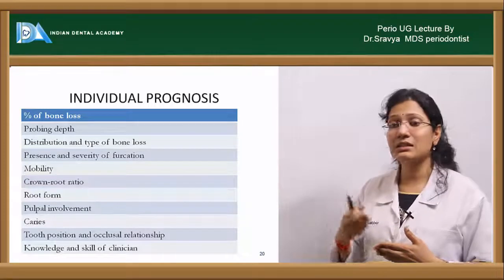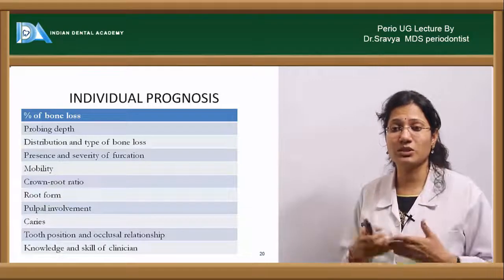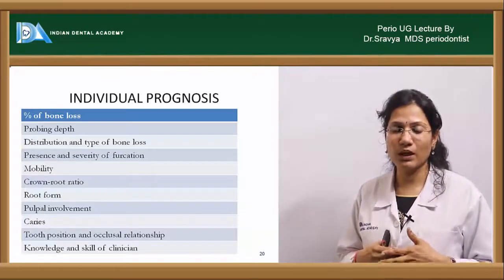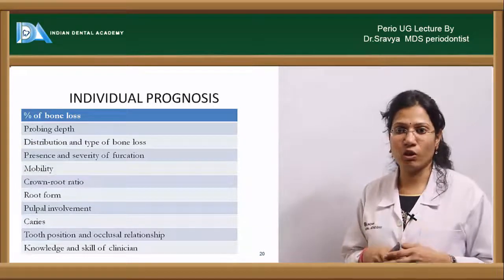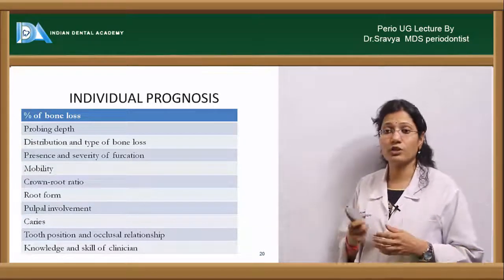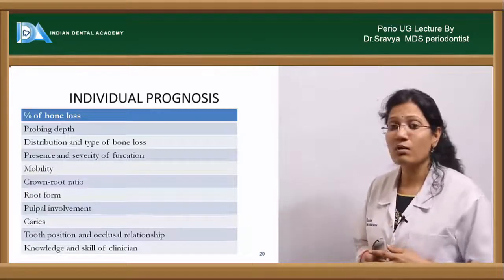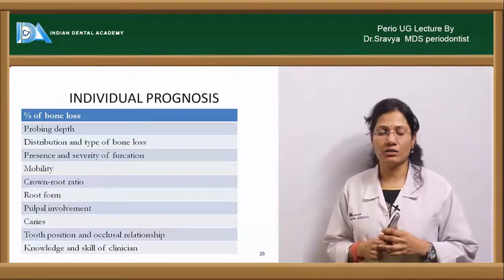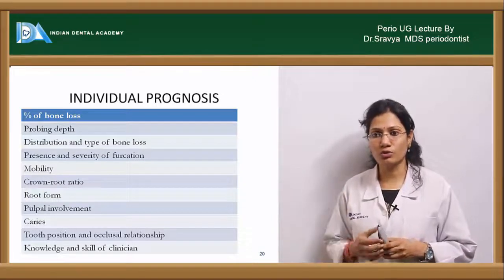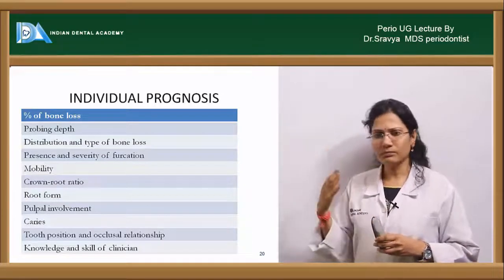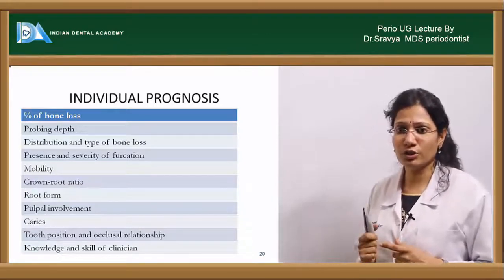Apart from that, presence and severity of infection — how severe is the infection, whether the patient is having multiple abscesses — and the presence and severity of furcation, with what grade of furcation is involved. And then mobility — what grade of mobility is involved. All these are factors which have an individual role in determining your individual tooth prognosis.